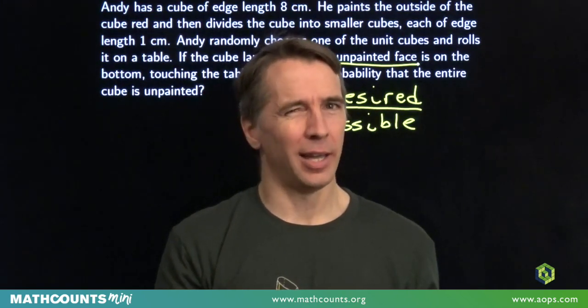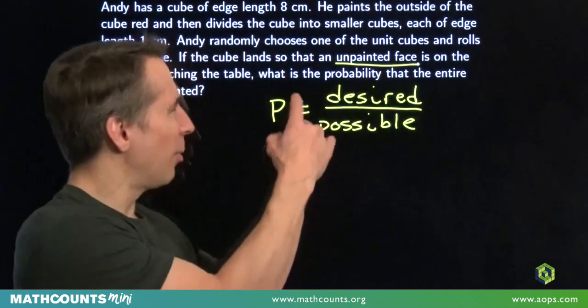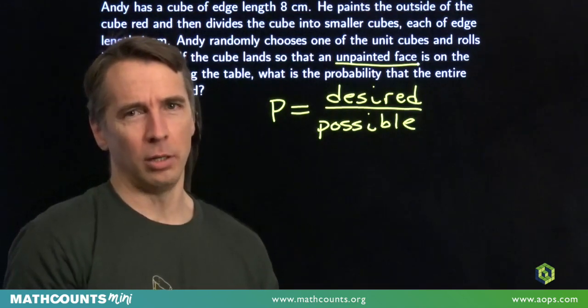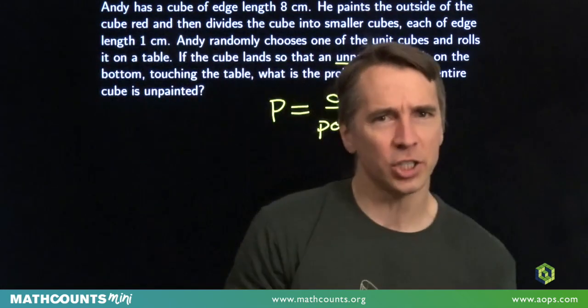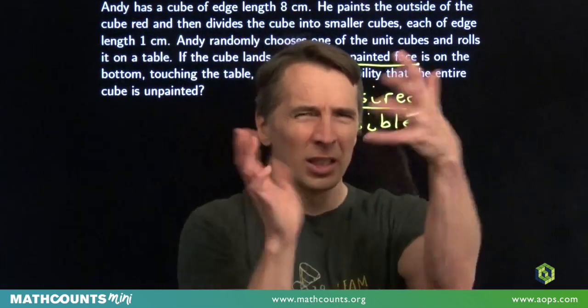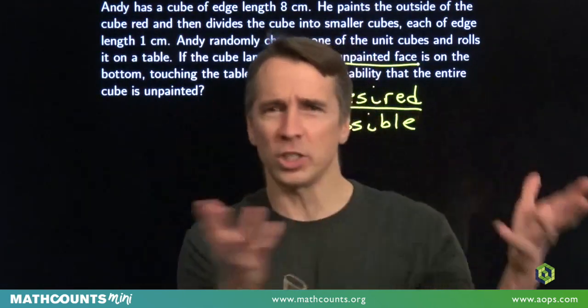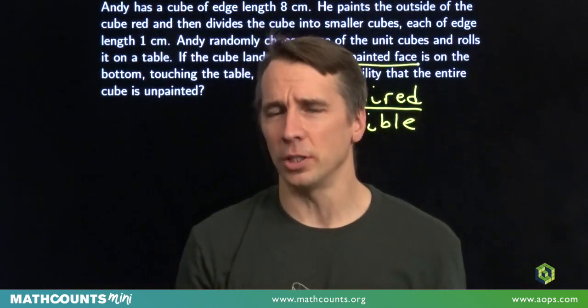You might not buy that, right? I didn't buy that when I first started seeing problems like this either. How does getting that information change the fact, change what we know about which cube was possibly chosen?